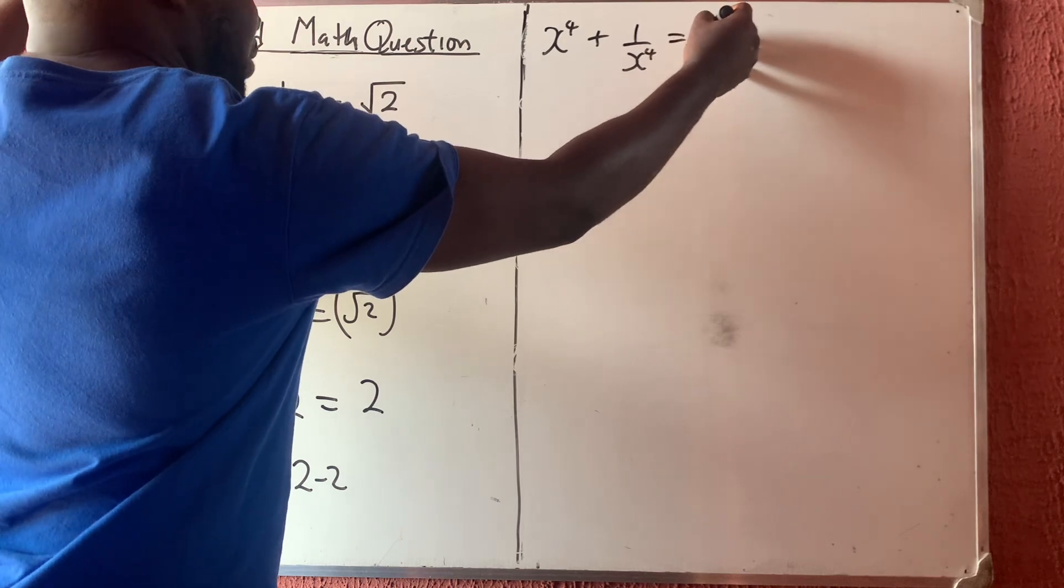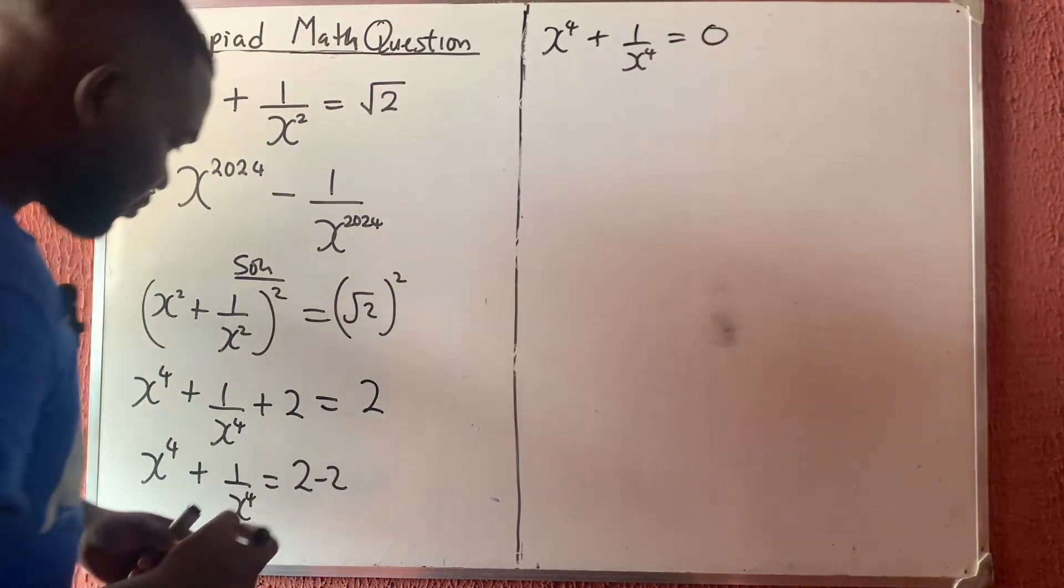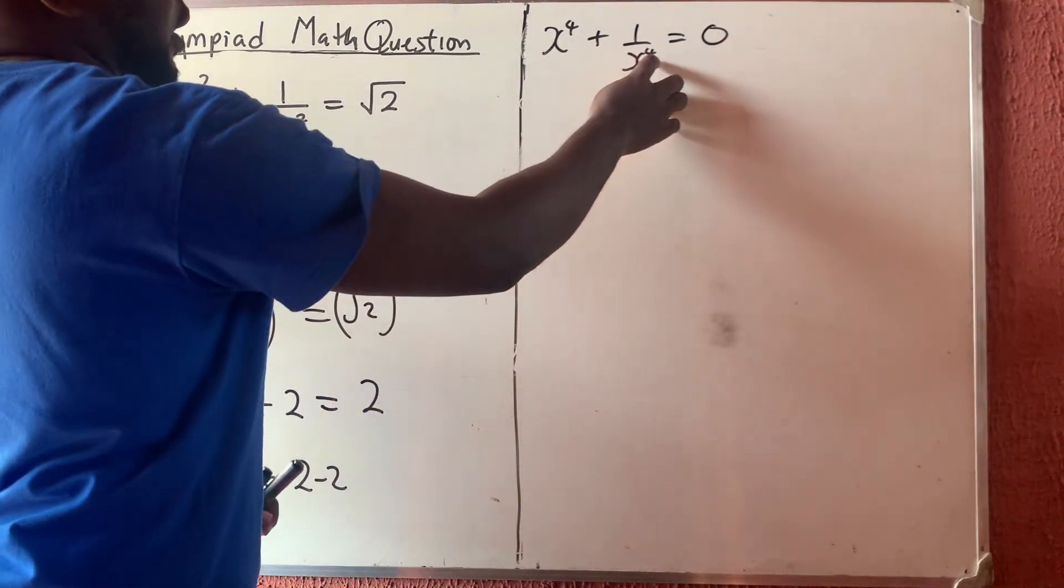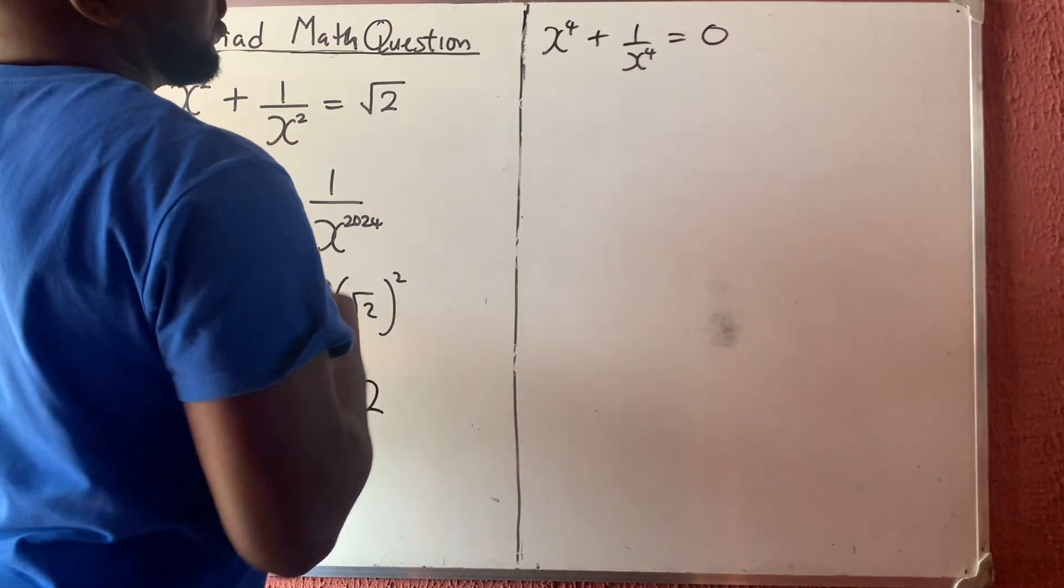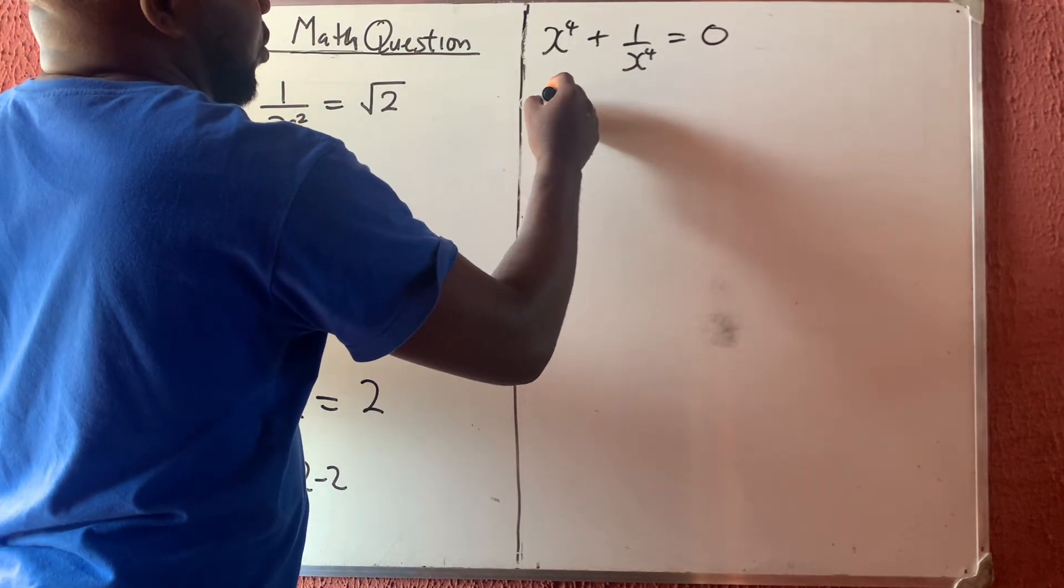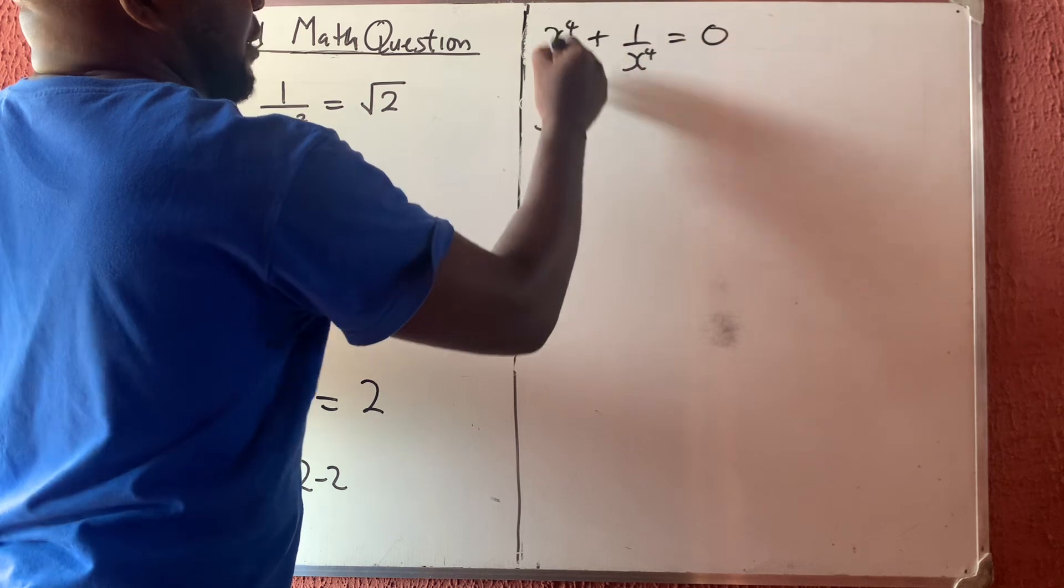So now let us multiply both sides by x to the power 4 so that this one here will move. Multiply by the LCM of the denominator. So if I multiply by x to the power 4, I'm going to have x to the power 4 times this will give you x to the power 8 plus 1 over...